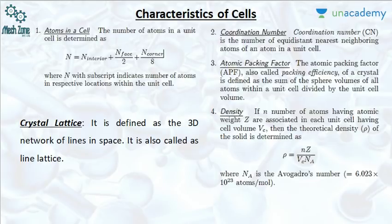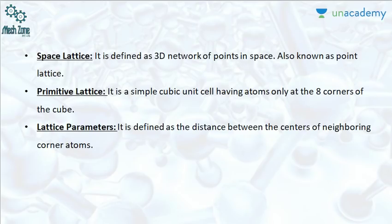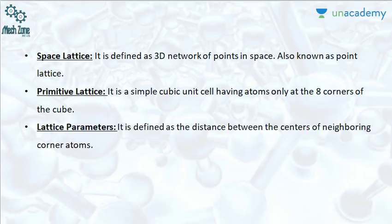Next we have the crystal lattice, defined as the 3D network of lines in space, also called the line lattice. The space lattice is the 3D network of points observed in space. The primitive lattice is a simple cubic unit cell having atoms present only at the eight corners of the cube. Lattice parameters are defined as the distance between the centers of the neighboring corner atoms.